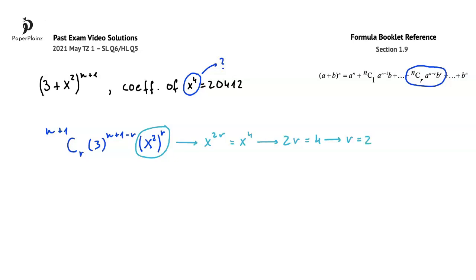The next key point to recognize here is that the coefficient of any term in this expansion can be calculated by using this part of our expression. We figured out that for the term where x is to the power of 4, r is equal to 2, so we can write that n plus 1 choose 2 multiplied by 3 to the power of n minus 1 is equal to the coefficient of this term, so 20,412.